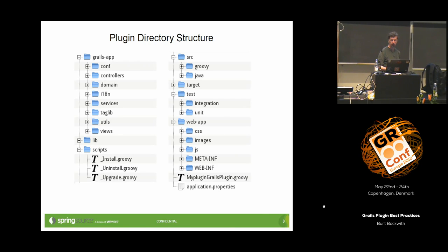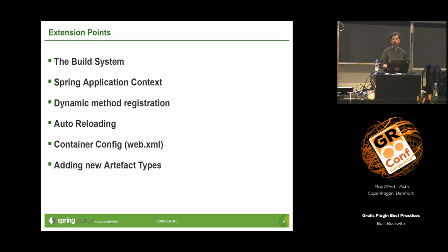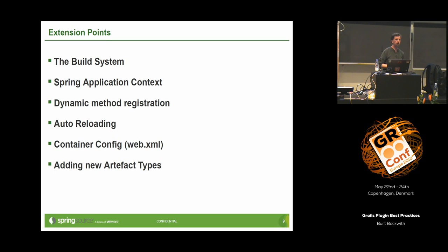There are these extension points. A plugin usually adds in some behavior. You add to the build system, you add in scripts. For example, the database refactoring plugin adds about 30 scripts. The Spring Security plugin adds scripts to create domain classes. You can also create Spring beans — that's commonly done. The Spring Security Core plugin creates something like 60 or 70 Spring beans, most of which are the same ones you'd create in a non-Grails Java-based Spring application.